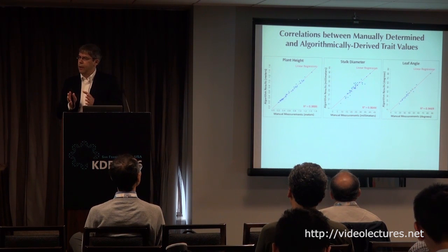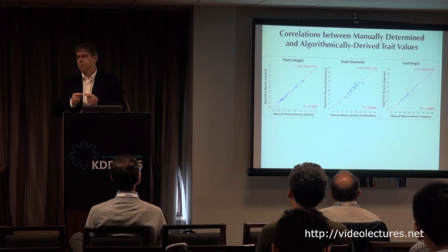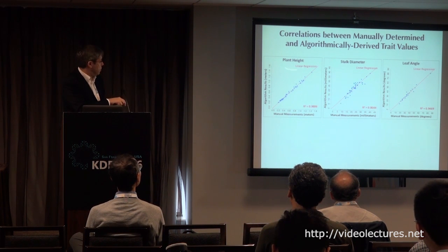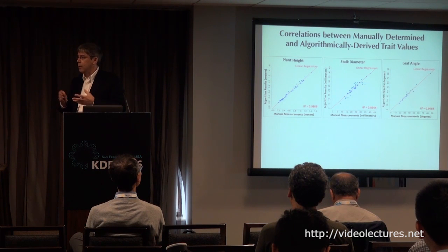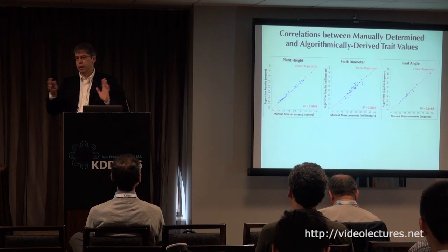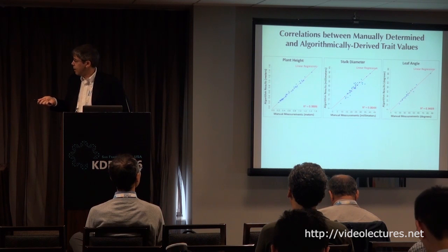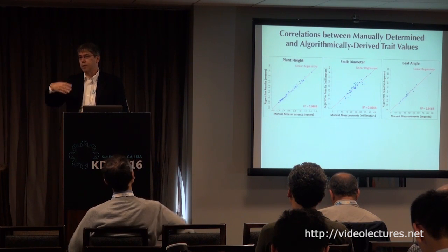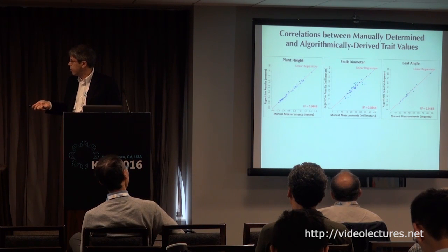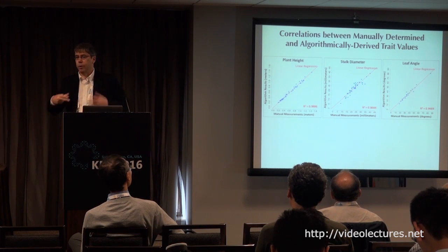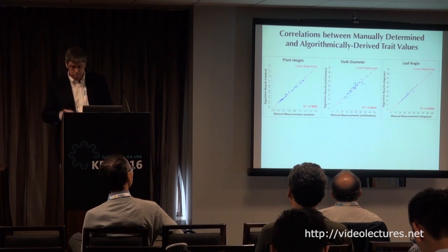We can compare the trait data extracted from those point clouds to manually measured trait data — for example, plant height, stalk diameter, and leaf angle. There is still some manual intervention; this is not a completely automated process — that's what we need to do. But in this semi-automated extraction process from the stereo images, you can see we're getting excellent correlations with physically manually measured traits.